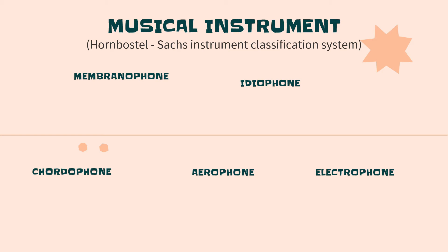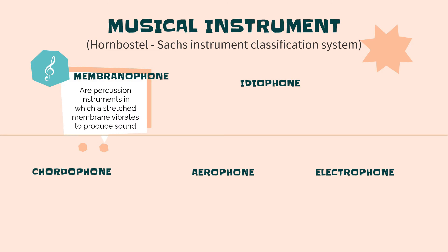Instruments are classified using five different categories depending on the manner in which the instrument creates the sound: idiophones, membranophones, chordophones, aerophones, and electrophones.